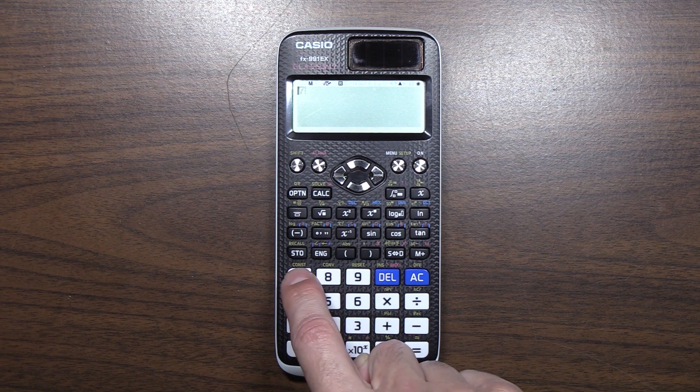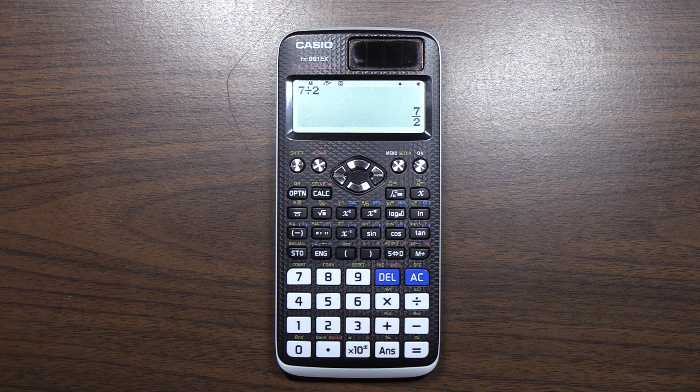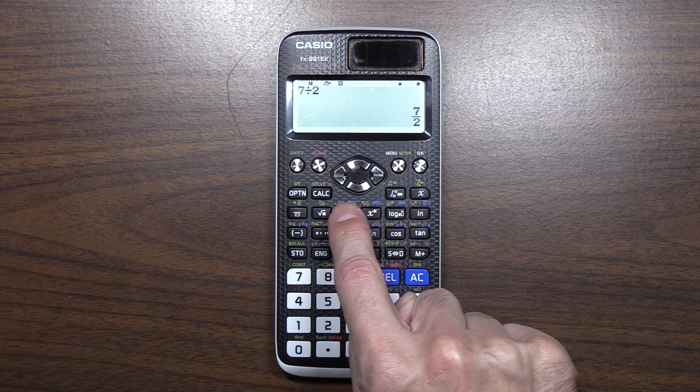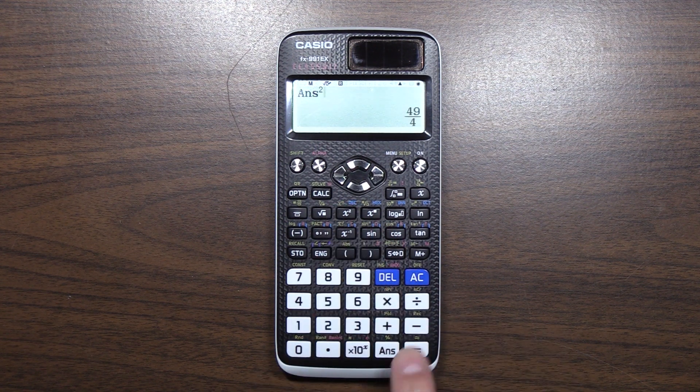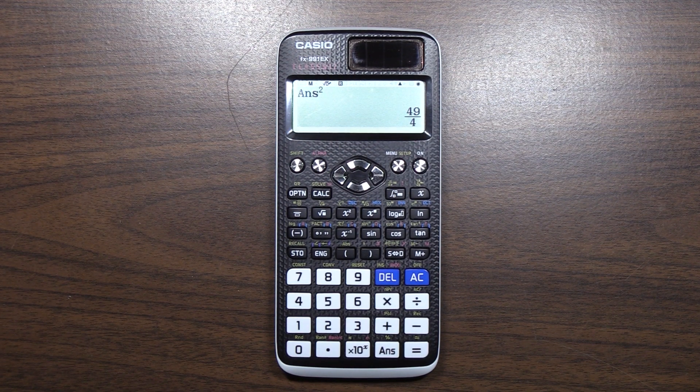So let's start, and we're just going to do, this is contrived, but seven divided by two, seven halves. Let's say we wanted to square that, forty nine fourths, and then let's say for some reason we want the decimal value.